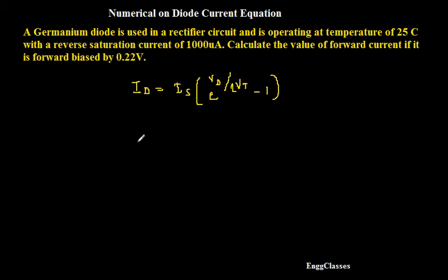Let me write down all the values which have been given. The reverse saturation current is 1000 microamperes, so IS equals 1000 into 10 to the power minus 6 amps. It is forward biased by 0.22 volt, that means VD is 0.22 volt.